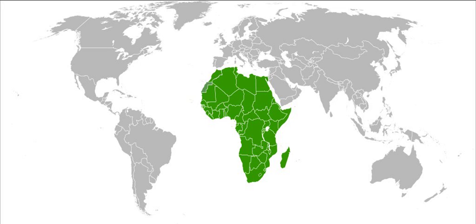The Sahrawi Arab Democratic Republic is declared in Western Sahara as Spain decolonizes. This leads to a land war between the Sahrawi nationalist Polisario Front and the armies of Mauritania and Morocco. Seychelles joins the OAU. Djibouti becomes independent of France and joins the OAU.